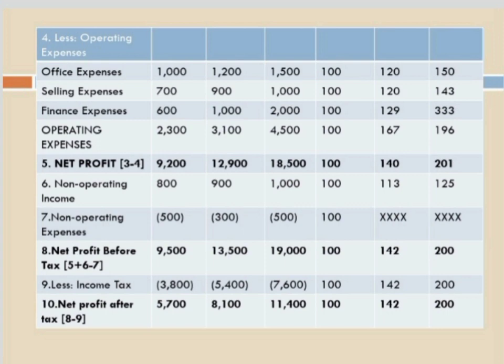Net profit is gross profit minus operating expenses. Year 1 = 11,500 minus 2,300 = 9,200. Year 2 = 16,000 minus 3,100 = 12,900. Year 3 = 23,000 minus 4,500 = 18,500. Percentage: Year 2 — 12,900 divided by 9,200 into 100 = 140. Year 3 — 18,500 divided by 9,200 into 100 = 201. Non-operating income: Year 1 = 800, Year 2 = 900, Year 3 = 1,000. Base year 100. Year 2: 900 divided by 800 into 100 = 113 (approx). Year 3: 1,000 divided by 800 into 100 = 125.